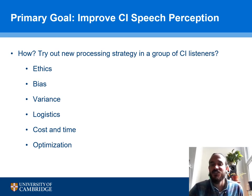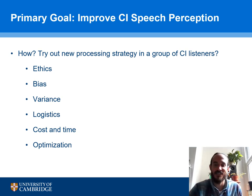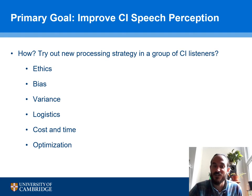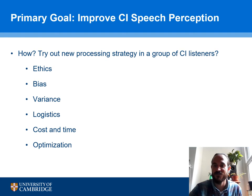There are logistical factors behind organizing take-home trials and double-blinding experiments and ensuring that you have a sufficient number of people. There are of course cost and time issues, and the question of how to optimize the processing strategy before trying it out in a group of CI listeners.